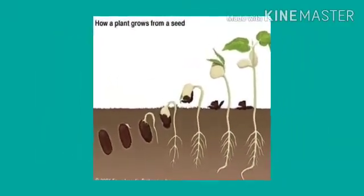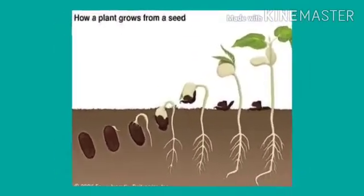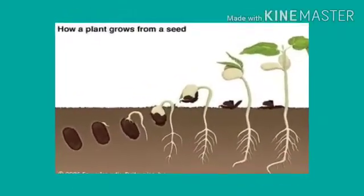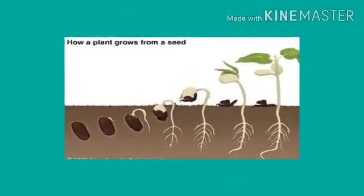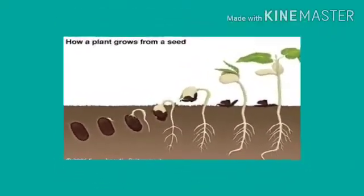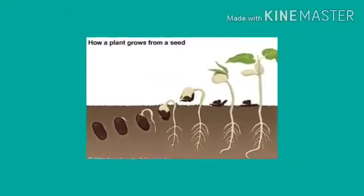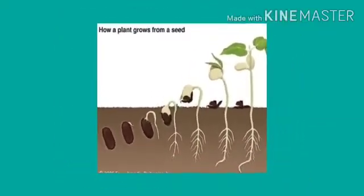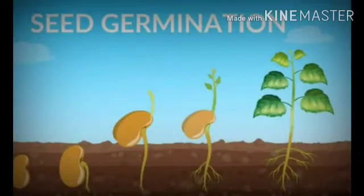Now we will study how a plant grows from a small seed. Firstly, there is a very small tiny seed under the ground. As we give it proper water and proper sunlight, a small sprout comes out, and from that sprout slowly the shoot rises above the ground with the roots inside the ground. As it gets proper water and sunlight, the plant is grown, and after many years from that small plant, a tree is grown. This is known as germination of a seed.